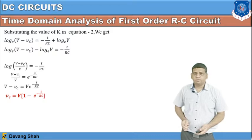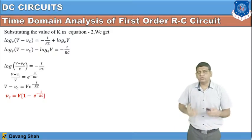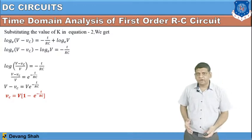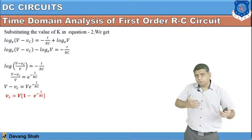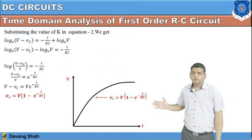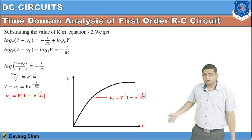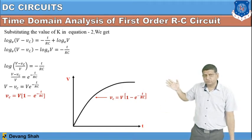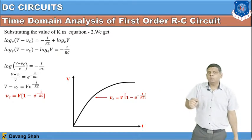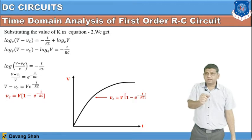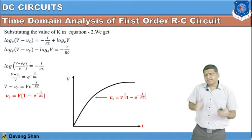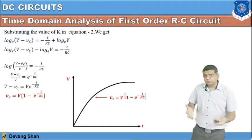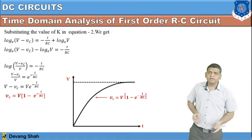This is a very important equation — you can see there is an exponential term. When you plot the voltage drop across the capacitor with respect to time, you get an exponential-shaped graph. The charging voltage across the capacitor follows the equation Vc equals V·(1 minus e^(minus T/RC)), where RC is defined as the time constant. Let us now analyze this important equation in terms of the graph.